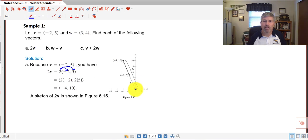So if we started at the origin for v and it has a negative 2, 5, we would double it. It would go all the way to negative 4, 10. So there's our sketch.